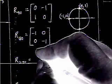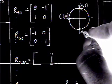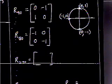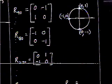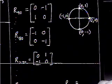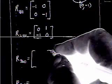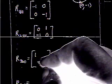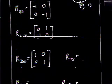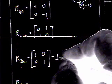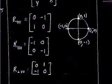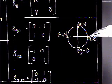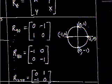Rotation 270 is at the point (0, negative 1). Applying x, x, y, opposite y gives us the R270 matrix. For 360 degrees — at the point (1, 0) — applying the pattern gives us x value 1, y value 0, and we get the identity matrix. That makes sense: rotating something 360 degrees does not change the object at all.